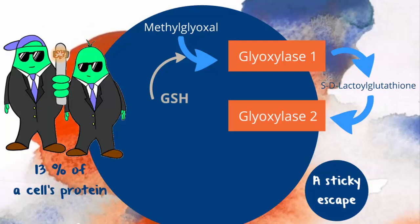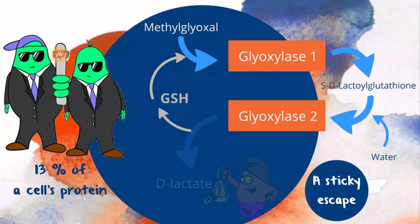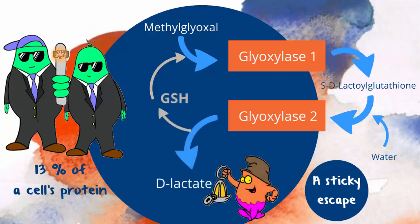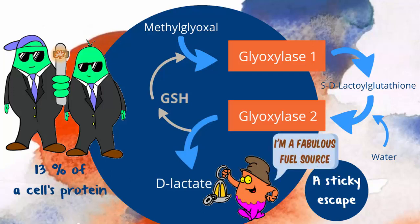GLO2 then comes in for the kill and pulls the glutathione off, leaving a D-lactate behind. The D-lactate is harmless, and in the long run quite valuable — it can be recycled for energy.